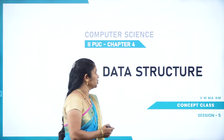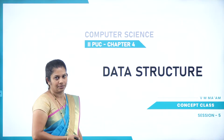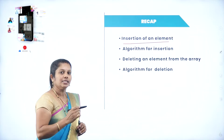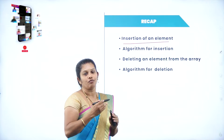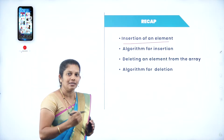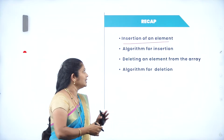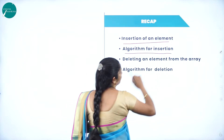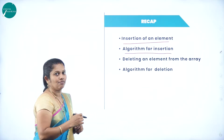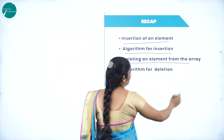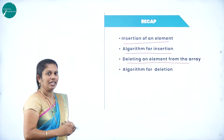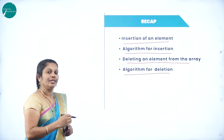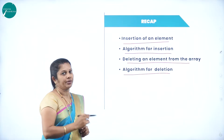Today we are going to start with the 5th session of the Data Structure chapter. In the previous session, you studied regarding insertion of an element — inserting a particular element at a particular position in an array. You also covered the algorithm for insertion, deleting an element from the array, and the algorithm for deletion.